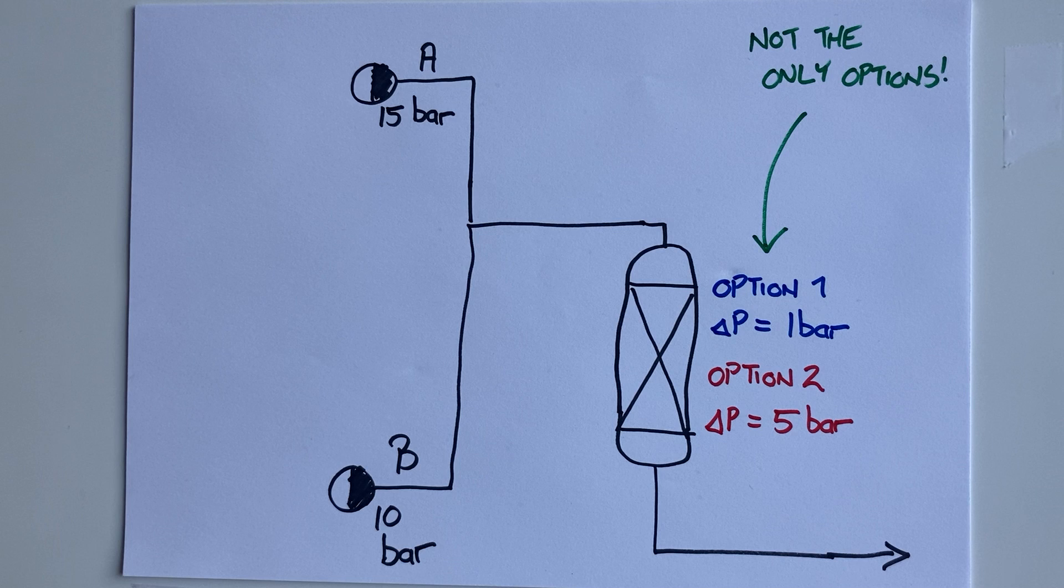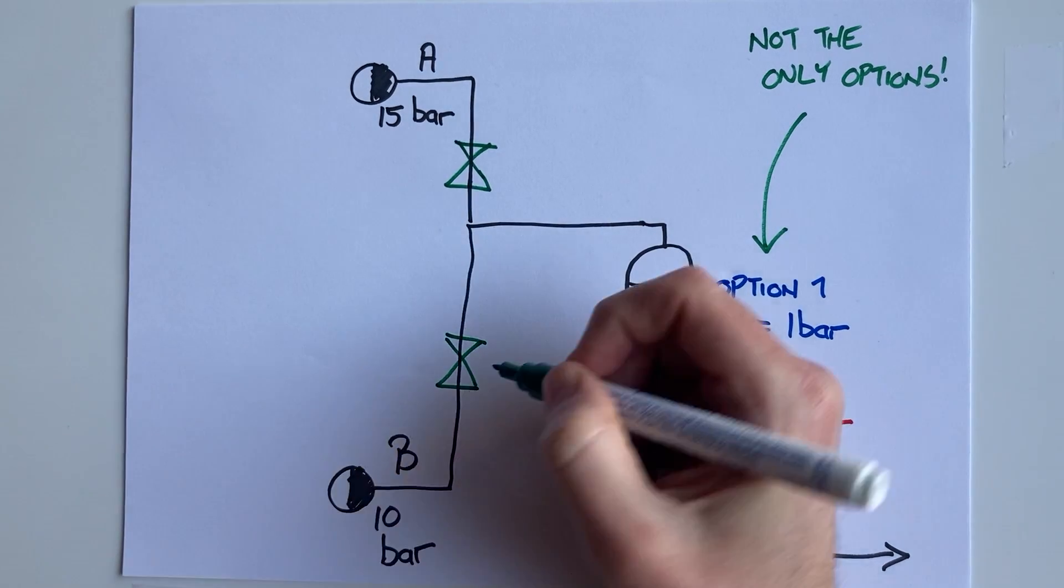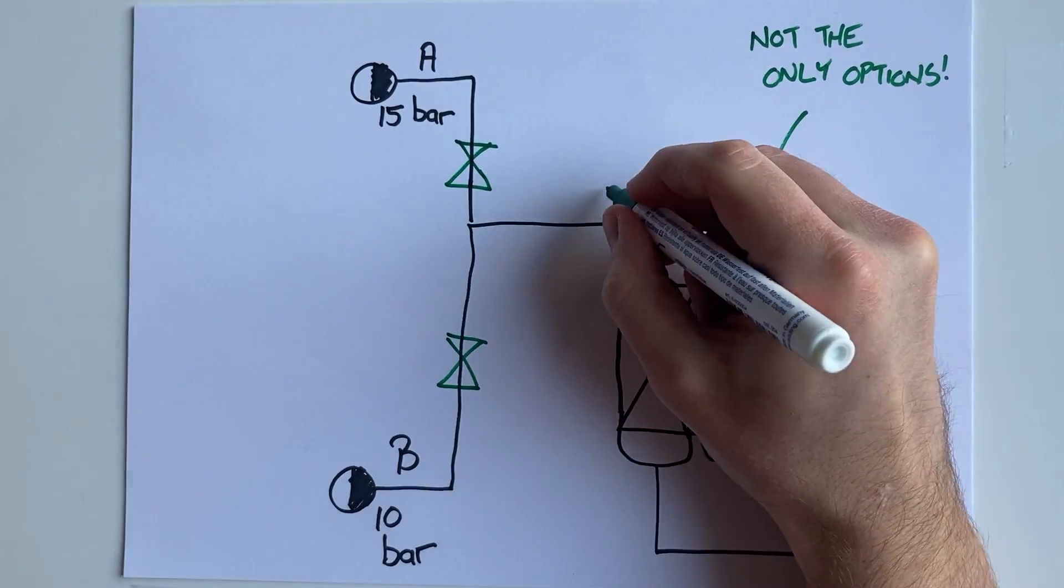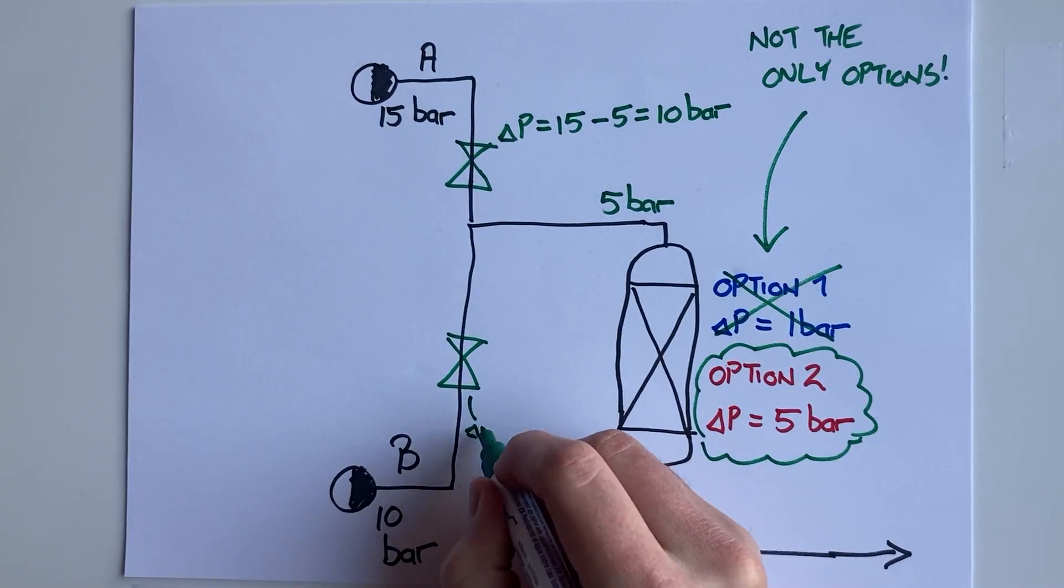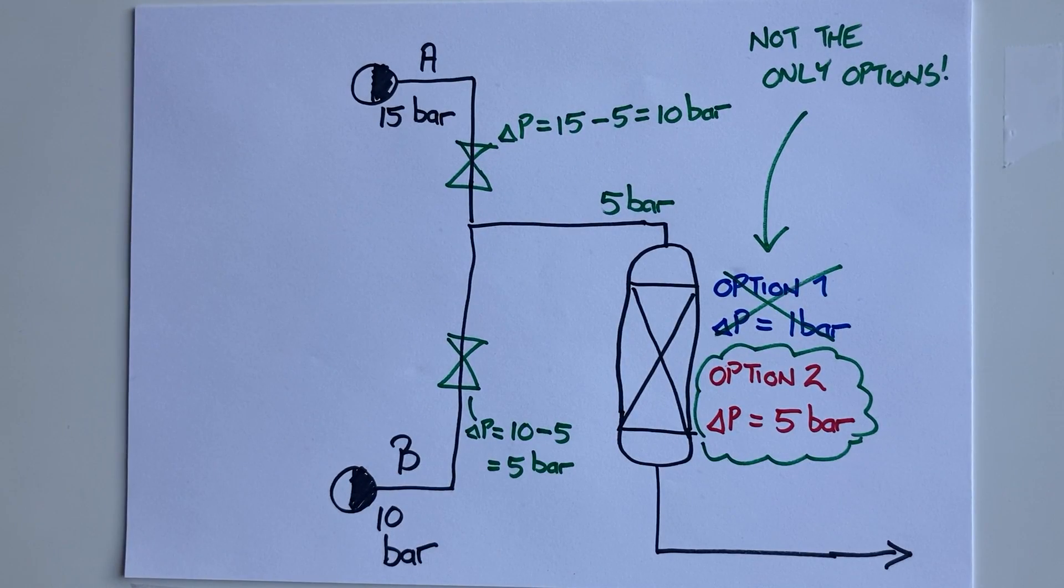If I decided my stream was going to need 5 bar to get the required flow rate through my reactor, then my mixing pressure would need to be at least 5 bar. I would then need to install valves on the feed lines to achieve the pressure drop from 15 bar and 10 bar down to 5 bar. If instead I designed my reactor to have a pressure drop of 1 bar, I would have very different valves giving me different pressure drops than previously to make sure that the streams mix at the pressure of 1 bar.